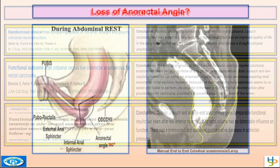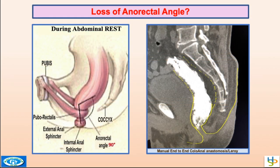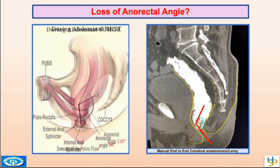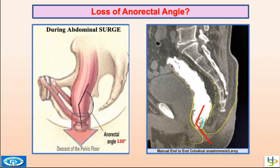Loss of the anorectal angle: if we do anastomosis too straight, we will lose the angulation that provides good continence via the flap valve. Because of the straight anastomosis, particularly with liquid stools, we will have a loss of fecal mass.